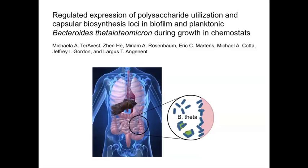B-theta is a common bacterium in the human gut where it ferments complex plant material into short-chain fatty acids that are easily absorbed by its host. B-theta is found free-living in the gut lumen and also as part of an attached biofilm-like community on gut surfaces and food particles.